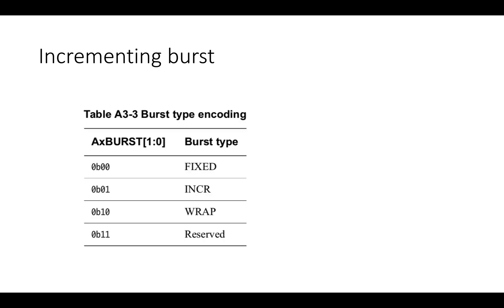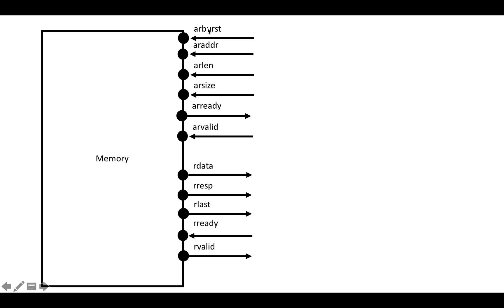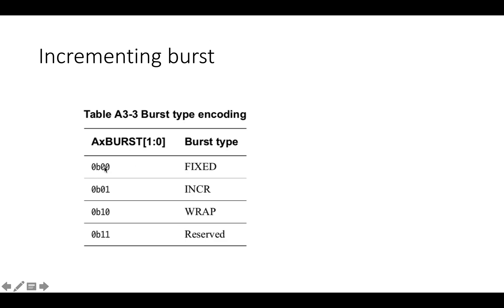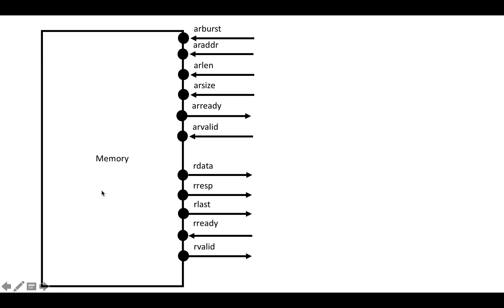First, we're going to do an incrementing burst, so the first question is: what is AR burst going to be? AXI AR burst is a two-bit field — it's called AX burst rather than read burst or write burst because there's a burst type for both reads and writes. Bursts can be fixed (writing to the same location repeatedly), incremental, wrapping, or there's a reserved burst type for possible future additions to the standard. Since we're doing an incremental burst, we're going to put the value 01 on the AR burst wire.